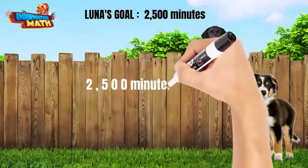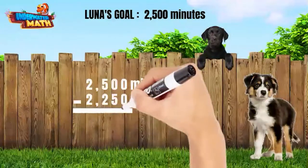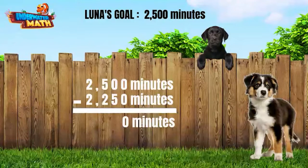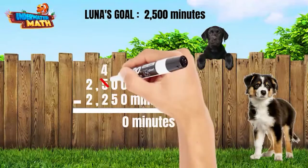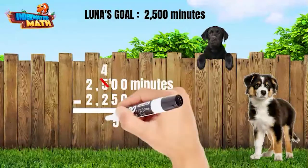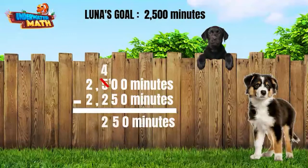The question asked how many more minutes Luna needs to run to meet her goal. We can subtract the minutes she has run from her goal to find the remaining amount. Again, we start in the ones place. Zero minus zero equals zero. Next is the tens place — we cannot subtract five from zero, so we need to borrow from the next place value. The five becomes a four and our zero becomes a ten. Now we can subtract: ten minus five equals five. In the next place value we have four minus two, which is two. Finally, two minus two is zero. Luna needs to run another 250 minutes to reach her goal.